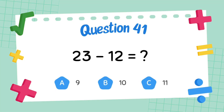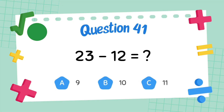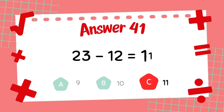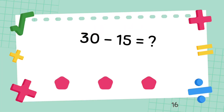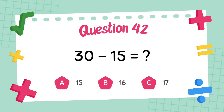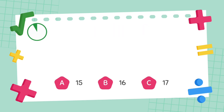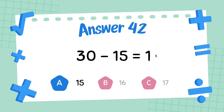What is 23 minus 12? The answer is 12. What is 30 minus 15? The answer is 15.